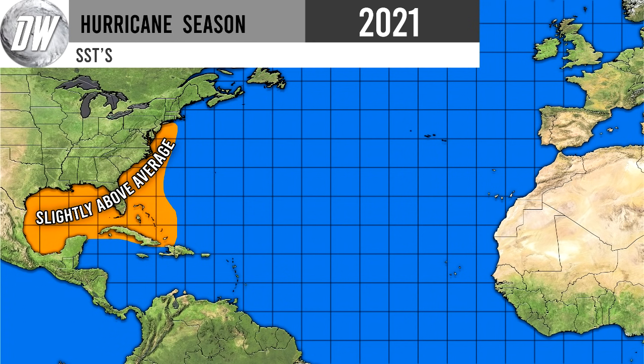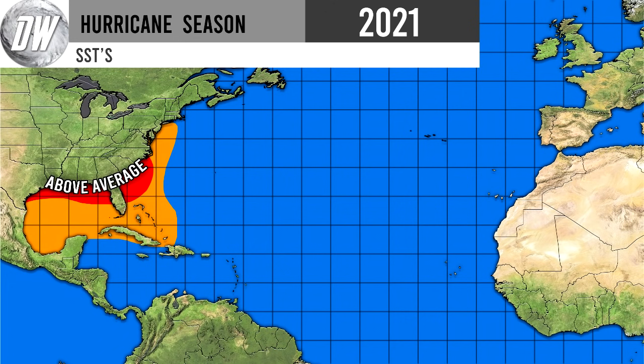Now let's move right into the sea surface temperature anomalies, and this is going to be huge because tropical storms and hurricanes develop much more easily in warmer water temperatures. They need a certain temperature to thrive, and if you have above average sea surface temperatures it's even better for tropical cyclones — the warmer the better. Having above average sea surface temperatures in the Gulf of Mexico is a really bad combo, and as you can see, that is exactly the combo we have. Even surrounding regions around Cuba, the Bahamas, and the east coast are all at least slightly above average.